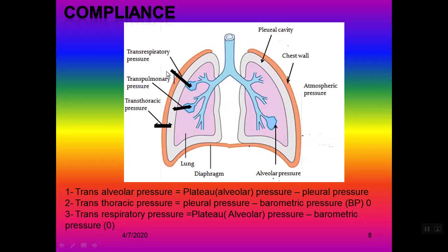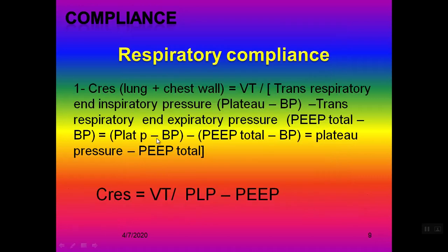So the total compliance is measured using trans-respiratory pressure: airway or alveolar pressure minus barometric pressure. Trans-alveolar or trans-pulmonary pressure is airway pressure minus esophageal pressure, during inspiration minus during expiration. Trans-thoracic pressure is esophageal pressure minus barometric pressure, during inspiration minus during expiration.